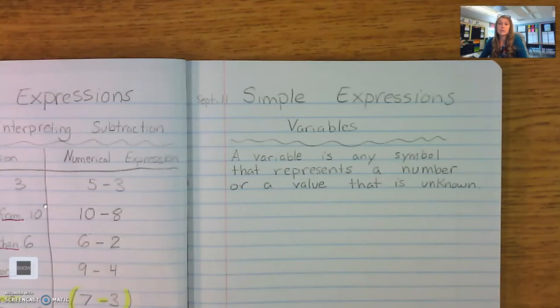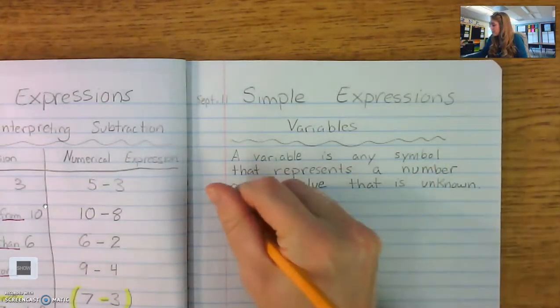So as you get into middle school and high school and you start working with algebraic equations, algebra is when we have an equation with a missing piece and we have to go in and find that missing piece. So we label the unknown with a variable typically a letter like x, y, z, a, b, could be an e.